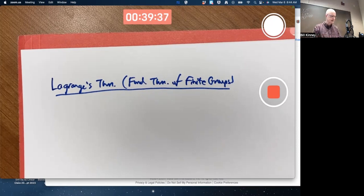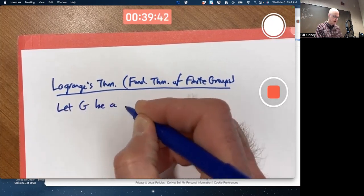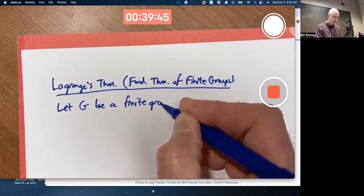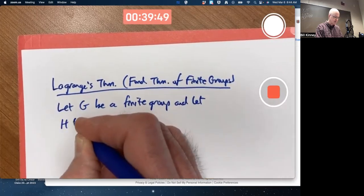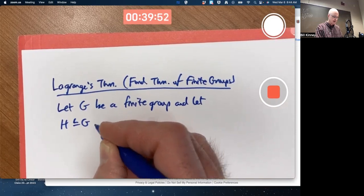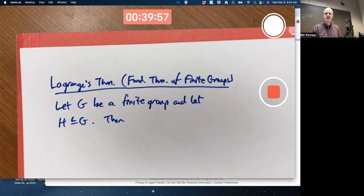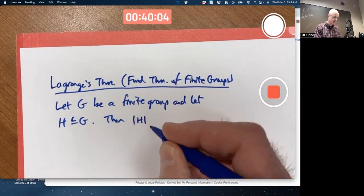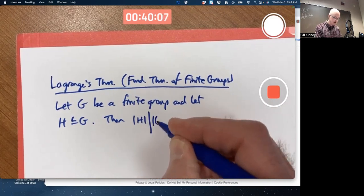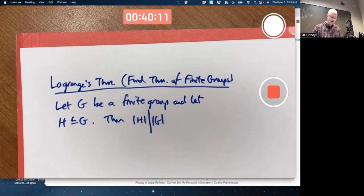Lagrange's theorem is a partial generalization of that. Let G be a finite group and let H be a subgroup of G. The conclusion is then the order of H divides the order of G. Which, if we use our textbook's notation, involves lots of vertical lines. The order of H divides the order of G.